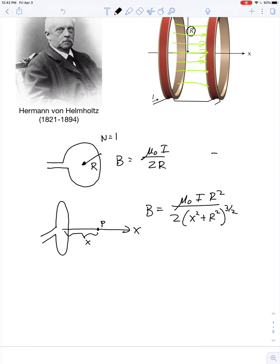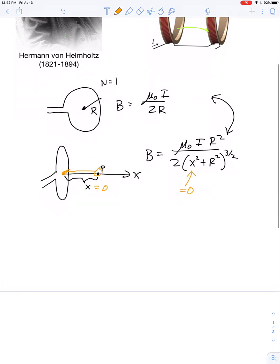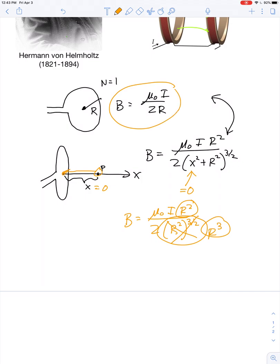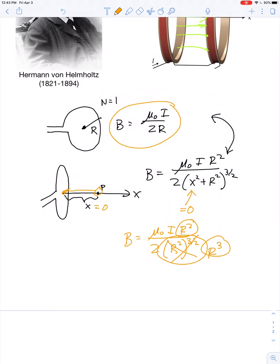Now let's just take a minute and see that these two agree with one another. So if I take the point p and I push it back to the center, then all I'm really saying is x equals 0. And so if we let x equal 0 in our second equation, then we would get b equals mu-knot-i r-squared over 2 times, well, 0 plus r-squared just gives me r-squared. And r-squared to the 3 halves power is the same thing as r-cubed. And then you see it, right? r-squared over r-cubed. This would all just resolve back down to b equals mu-knot-i over 2r.